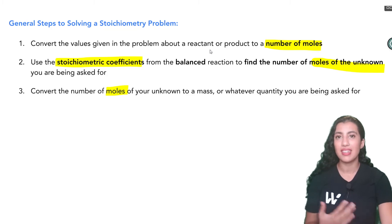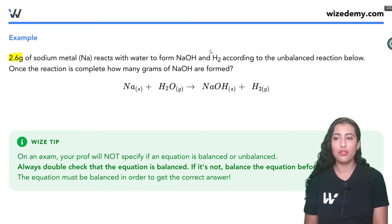So let's take a look at an easier example. So here we're told that we have 2.6 grams of sodium metal reacting with water to form sodium hydroxide and hydrogen according to the unbalanced reaction below. Then it says once the reaction is complete, how many grams of sodium hydroxide are formed?